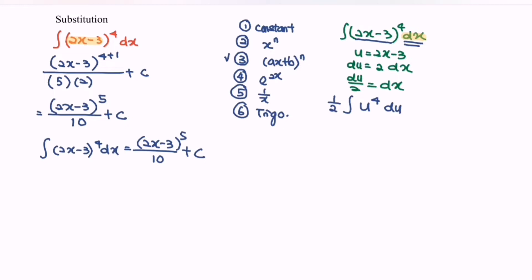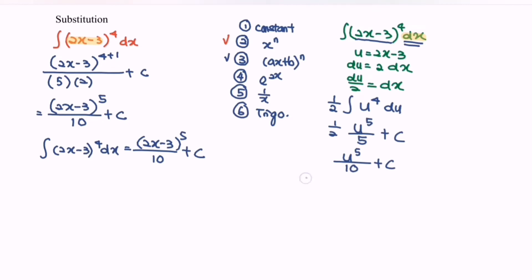Referring to the situation, we integrate u to the power 4. In this case, rule number 2 — the direct method — is suitable. If we integrate u to the power 4, we get u to the power 5 over 5, plus c. Rewriting the situation gives u to the power 5 over 10, plus c. So finally, integrating (2x minus 3) to the power 4 with respect to x equals (2x minus 3) to the power 5 over 10, plus c.